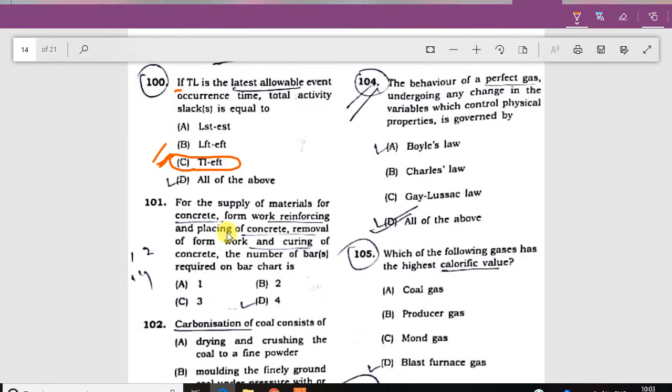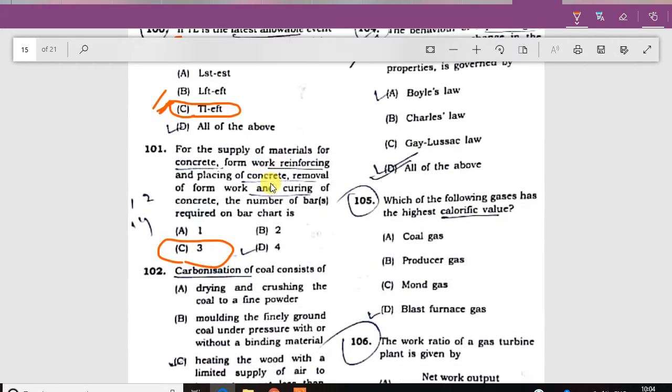Question 101: The supply of material for concrete work, reinforcement, planning, concrete removal from the work, and curing of the concrete. The number of bars required in the bar chart is three. The answer is three.